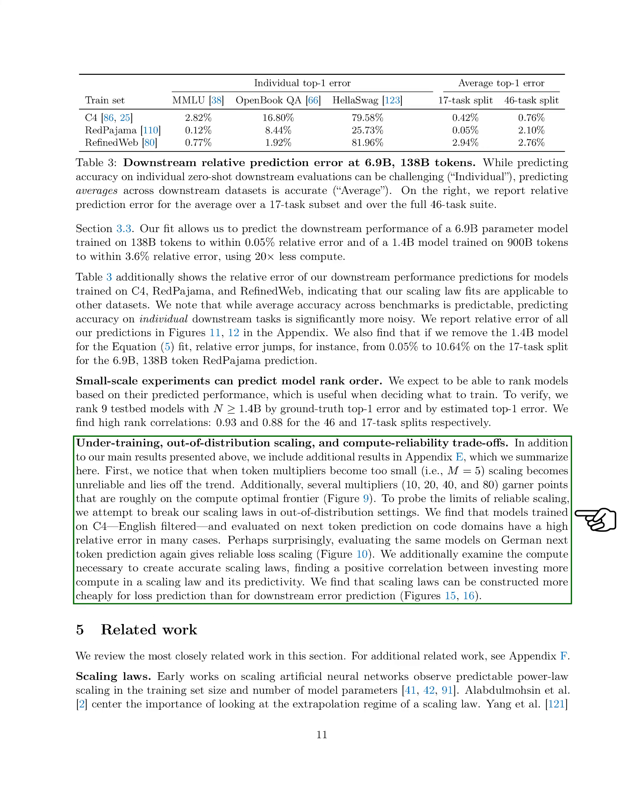In addition to our main findings, we present more results in the appendix. We observe that when token multipliers are too small, scaling becomes unreliable. Some multipliers show points close to the optimal compute frontier. We test the limits of reliable scaling by evaluating models in different settings.